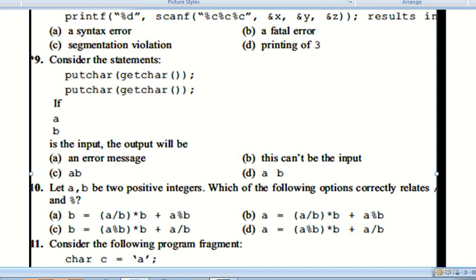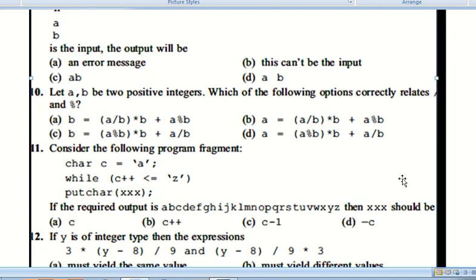Question number eleven: Let a, b be two positive integers. Which option correctly relates them? Option B is correct: a is equal to a divided by b times b plus a modulo b.